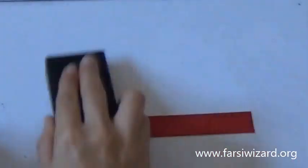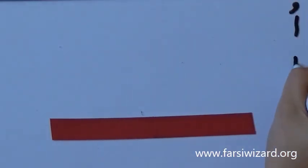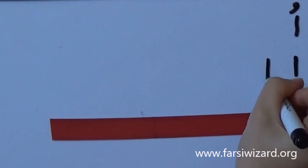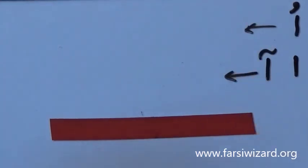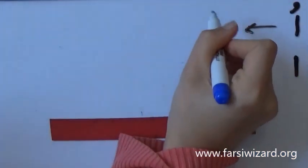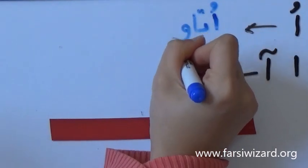Now, let's go to the other pair. So, in all of these cases, we are working with the letter Aleph, but different varieties, different sounds that it can create. So here we have O and A. In the case of O, remember it's a short vowel. So we have the example Otaq.